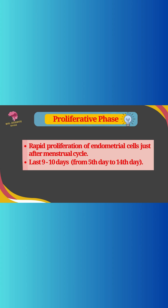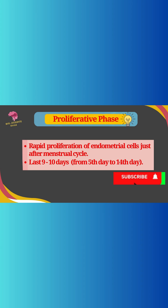The proliferative or follicular phase involves rapid proliferation of endometrial cells just after the menstrual phase. It lasts 9 to 10 days, from the 5th day to the 14th day of the menstrual cycle.